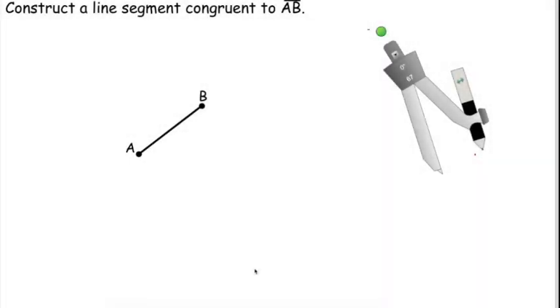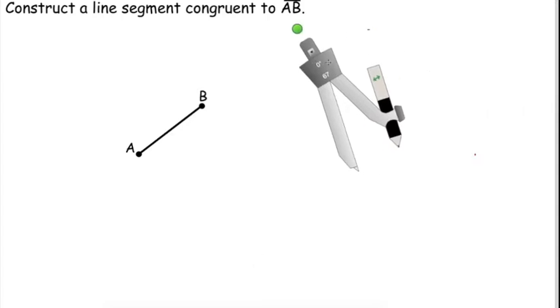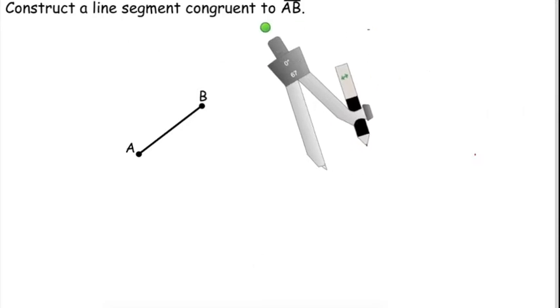In this lesson, we're going to show you how to construct a congruent line segment using a compass and a straightedge. I'm going to start by drawing a point, and this is a point representing my point A on my new segment.